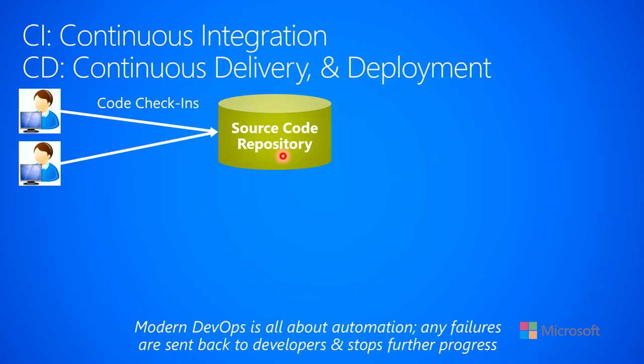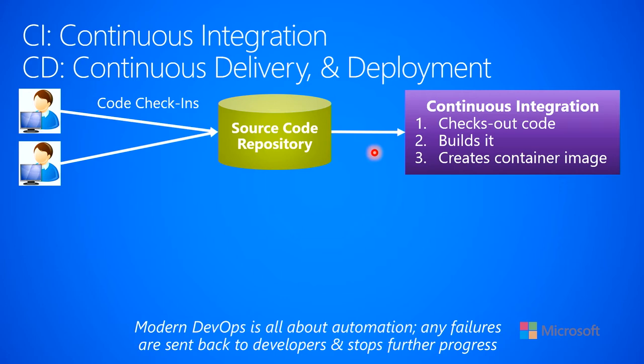Usually, once that's done, you would like the rest of the process to be completely automated. The part that requires people to do work is checking in code; the rest of this process you would like done in an automated fashion. So you would set up a continuous integration server. That CI server will periodically check the source code repository to see if new source code files have been checked in. When it sees that, it can go and check out that code, build that code, and then create a container image that has all that code in it. That's the continuous integration part — building everything and making sure it's all good.